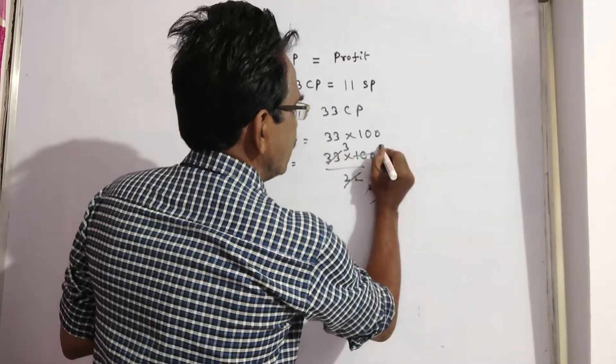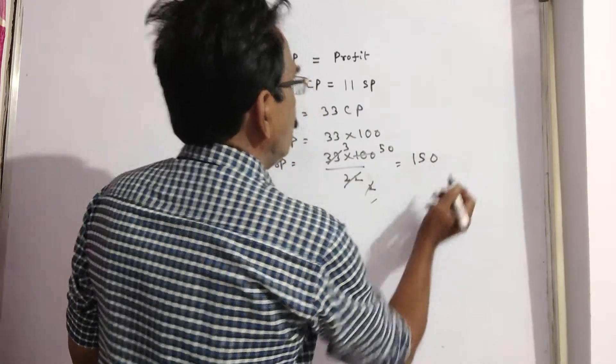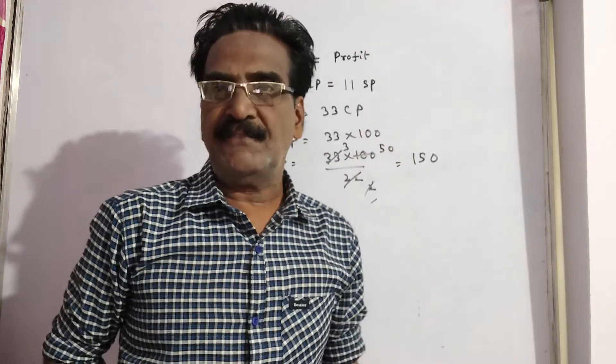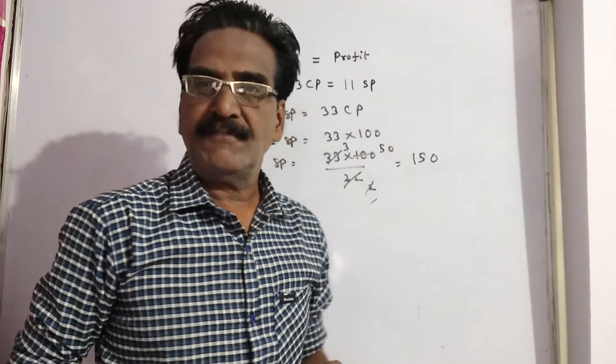So, if cost price is 100, the selling price is 150. That means profit is 50%.